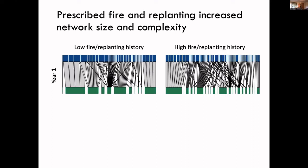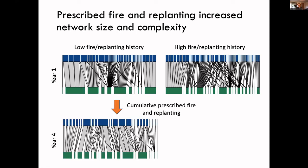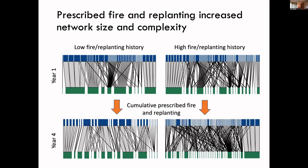Prescribed fire and replanting increased network size and complexity. In year one, a site with no fire or replanting history had a simpler network compared to a high fire and replanting history site. Over four years, the low fire site increased in complexity, but the high fire history site continued to increase even further. These restoration treatments continued to increase network complexity through time — we are definitely seeing reorganization of these networks in response to fire and replanting.